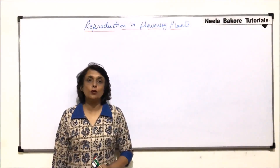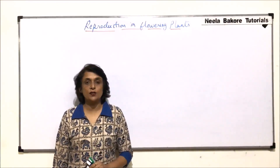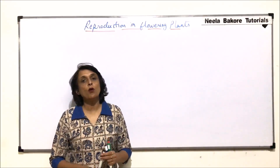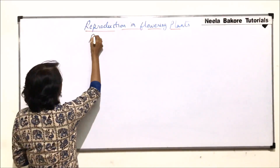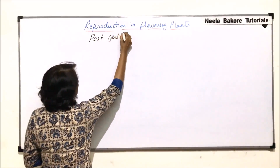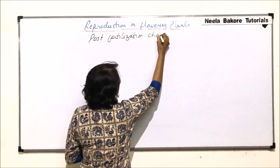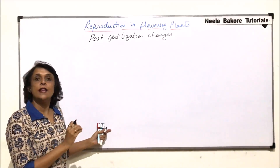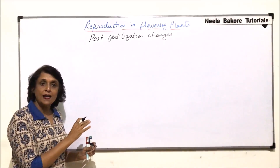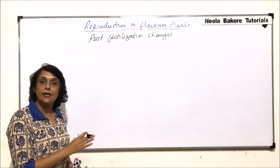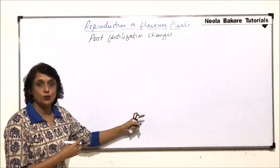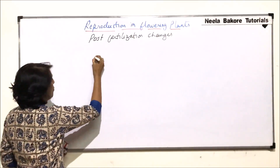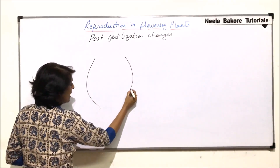In the previous part we discussed about the process of fertilization and double fertilization. Now, after fertilization, whatever happens is grouped under what we call post-fertilization changes. So we will start with post-fertilization changes. Before we take up all those changes, let us quickly go over what has happened so far and the structures formed as a result of fertilization and double fertilization, so that we understand which structure is giving rise to what.